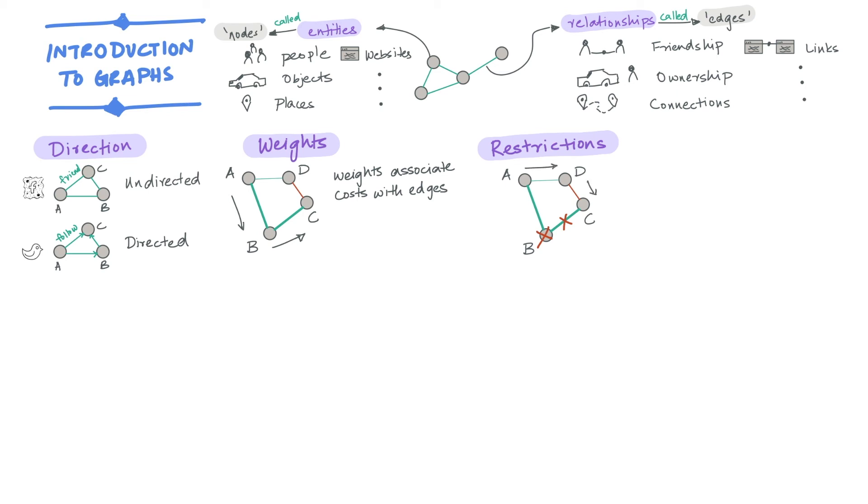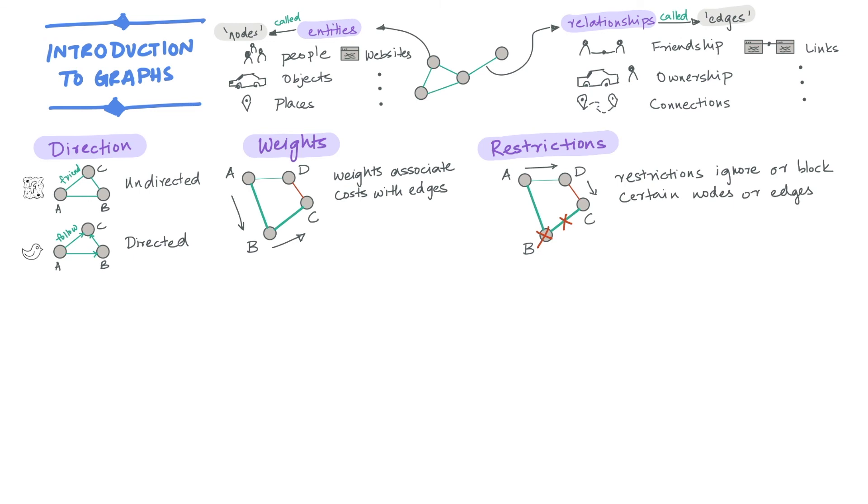Instead, we will now have to go via the city D to get to C. Restrictions allow us to model this new information into a graph by blocking certain nodes or edges while solving it.